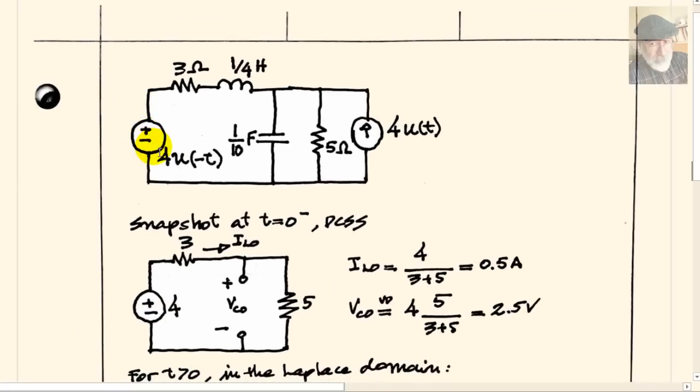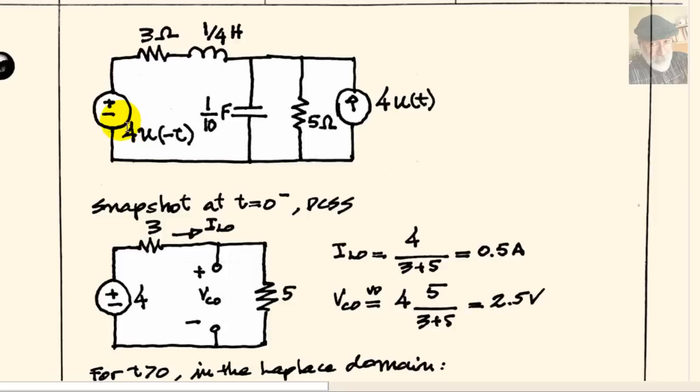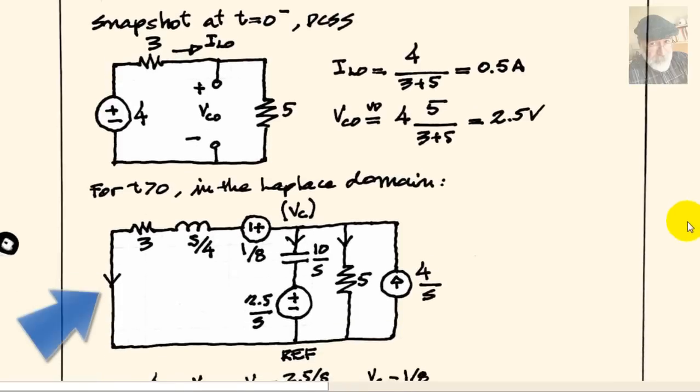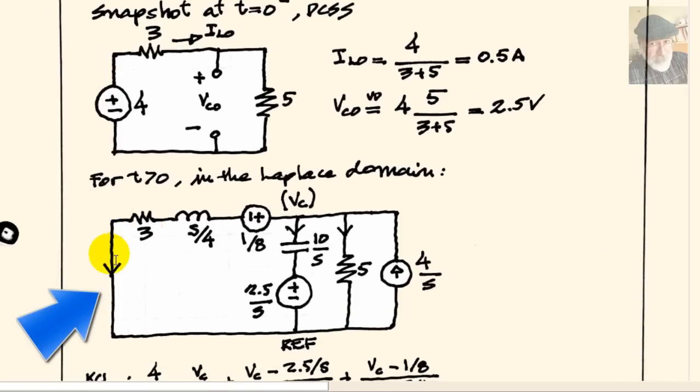The source on the left is 4 volts from minus infinity up to and including t equals zero, and it's zero after t equals zero. That's why that source appears down here in the snapshot at t equals zero minus as a 4 volts source. But when we represent that circuit for t after zero, the value of the source is zero. It is a short circuit, this one. That is a representation of the source after zero. It's zero volts, a short circuit.